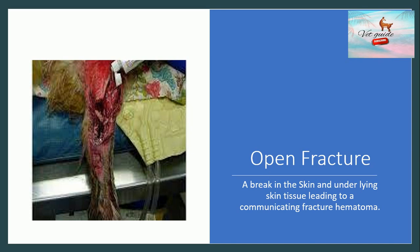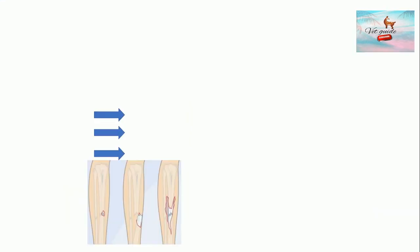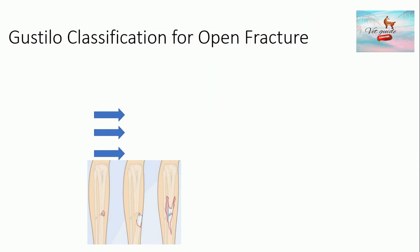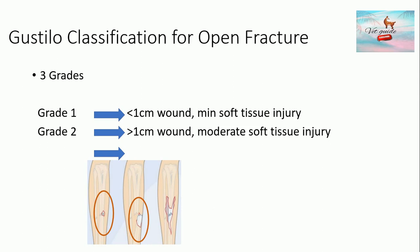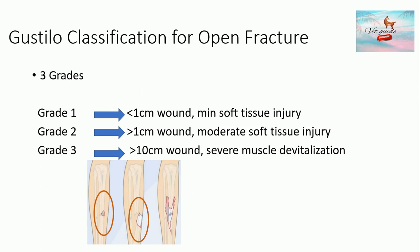The Gustilo classification for open fractures is further divided into three grades. A fracture is Gustilo Grade 1 when the wound is less than 1 cm and there is minimum soft tissue injury. It is Gustilo Grade 2 when the wound is more than 1 cm and there is moderate soft tissue injury. And it is Gustilo Grade 3 when the wound is more than 10 cm and there is severe muscular devitalization.